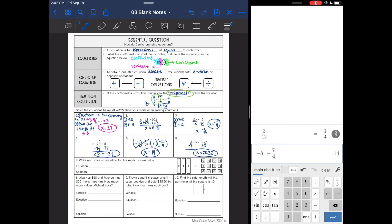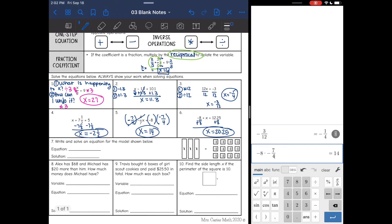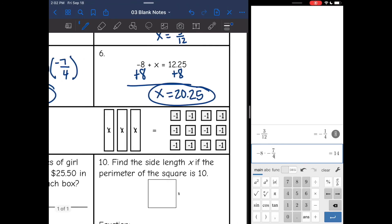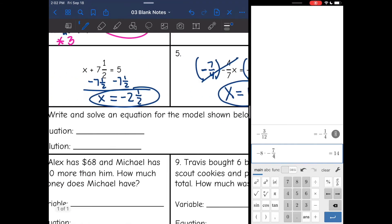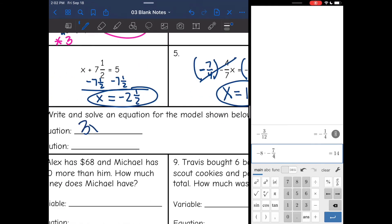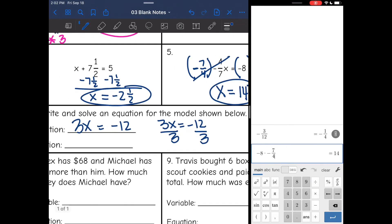Let's look at number 7. It says write and solve an equation for the model below. I can see on the left side of the equal sign, I have 3x. And then these are all negatives. And there's 1, 2, 3, 4, 5, 6, 7, 8, 9, 10, 11, 12 of them. So the equation is 3x equals negative 12. And to solve that, I would just divide both sides by 3, and I get x equals negative 4.